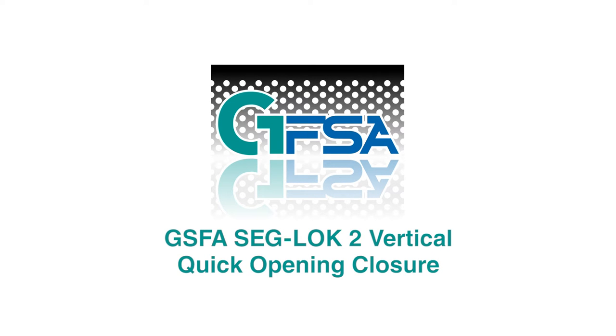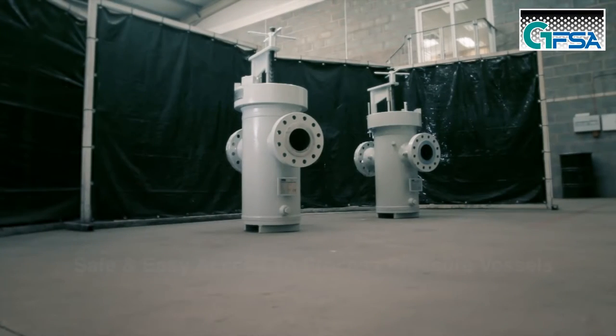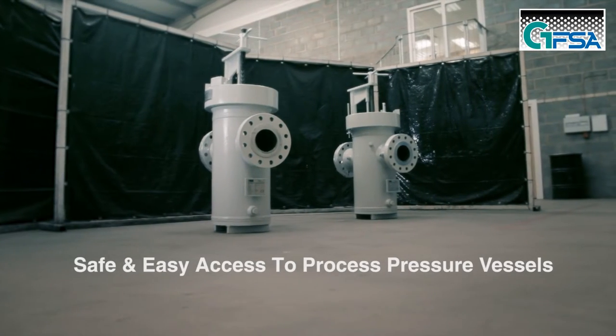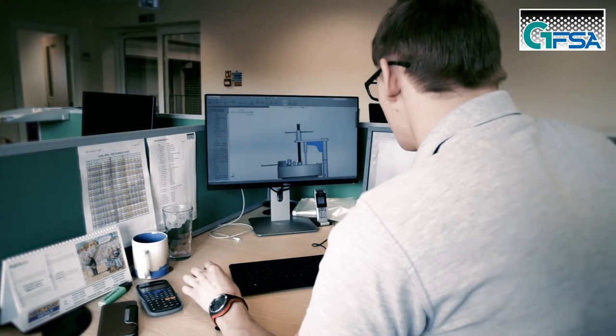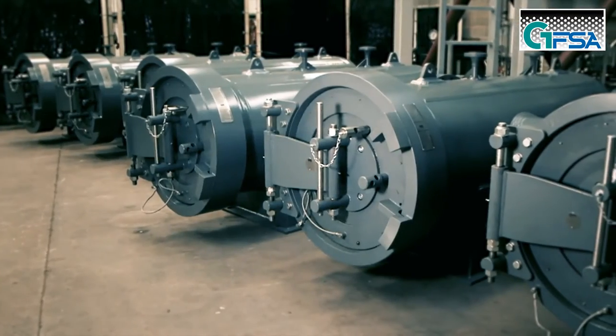The GFSA SIGLOK 2 Quick Opening Closure provides safe and easy access to process pressure vessels. Designed to suit vertical or horizontal positions.